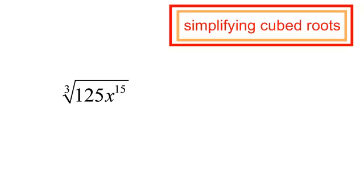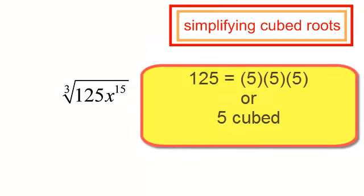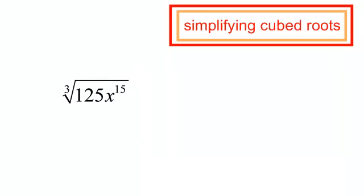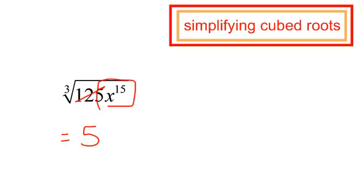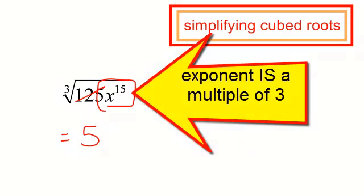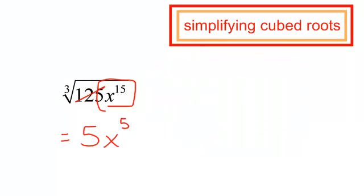Let's try another one: the cube root of 125 x to the 15th. Let's think about the number first. The cube root of 125 — I know 5 cubed is 125, so 125 is a perfect cube and it comes out as 5. Now the variable: this exponent 15 is a multiple of 3, so it's perfect also. 15 divided by 3 is 5, so x to the 15th comes out as x to the 5th. The answer is 5x to the 5th.